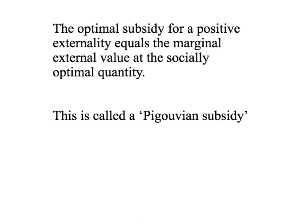Let's summarise. If we have a positive externality, then we have a market failure. How can the government fix it? They can put a subsidy in place to increase market production. The best the government can do is set an optimal subsidy exactly equal to the marginal external value at the socially optimal quantity — if they set their subsidy, the market will fix the problem. That's called a Pigouvian subsidy, after Arthur Pigou, who first realised this insight.